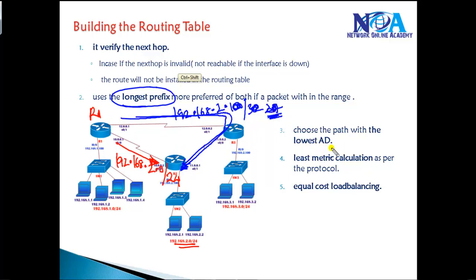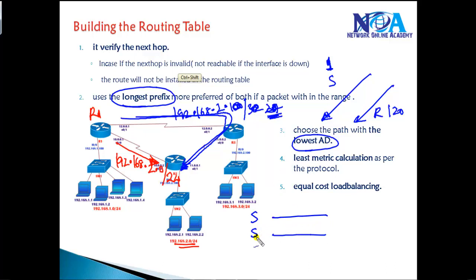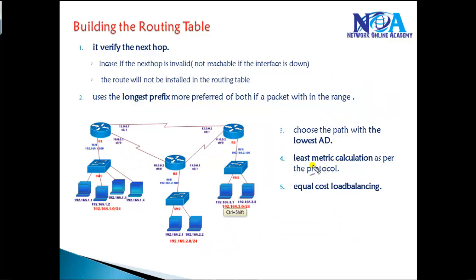If there is a tie in the longest match, the next condition it will check is administrative distance. If one route is coming via static (AD of 1) and another via RIP (AD of 120), it installs the route with the least administrative distance. If both routes have the same prefix and same administrative distance, it then checks the metric - for example, hop counts in RIP. If the metric is also the same, it performs load balancing across both routes.